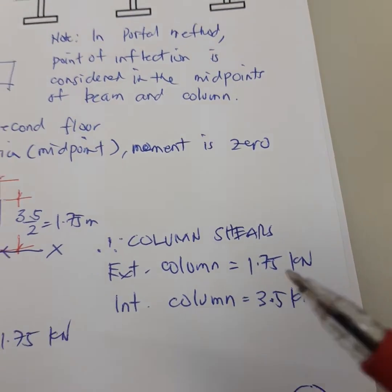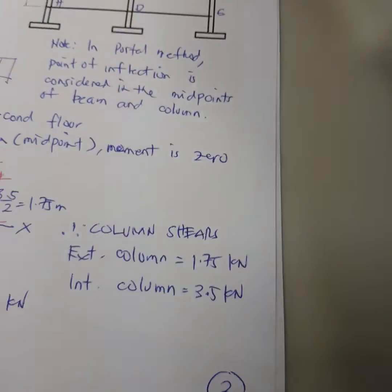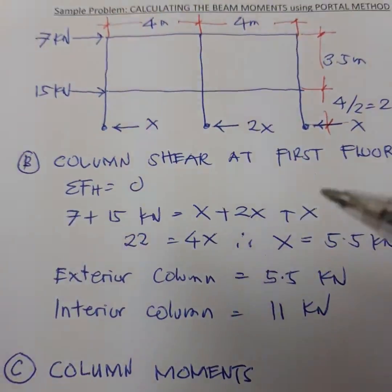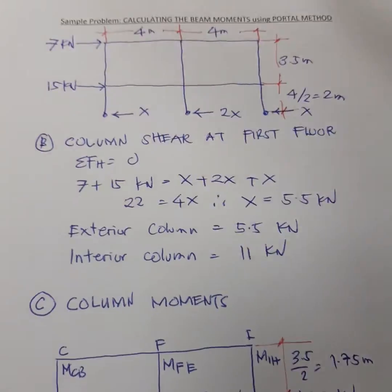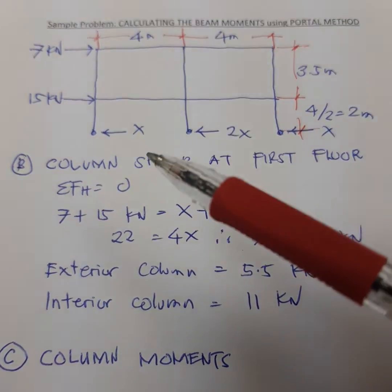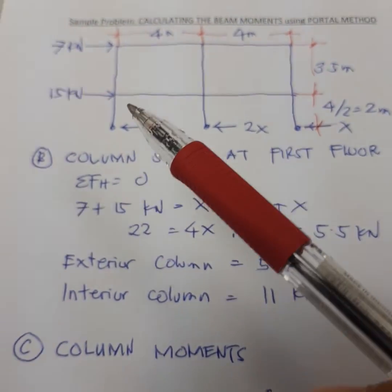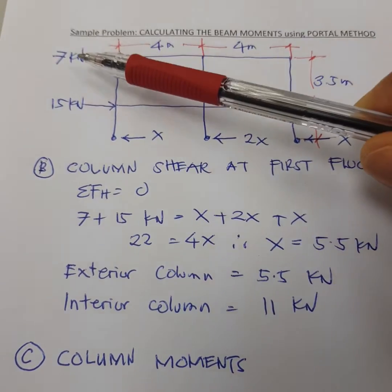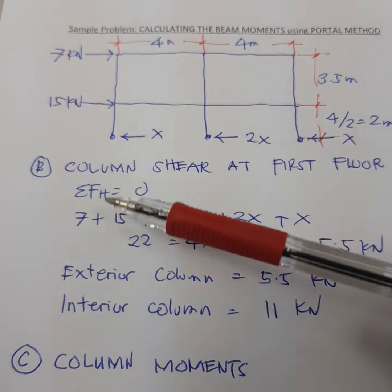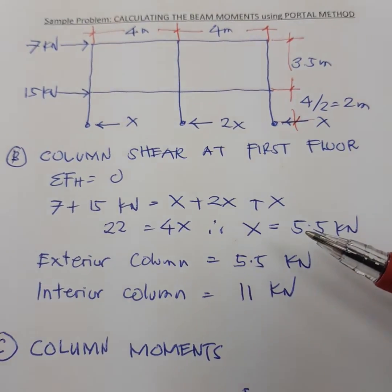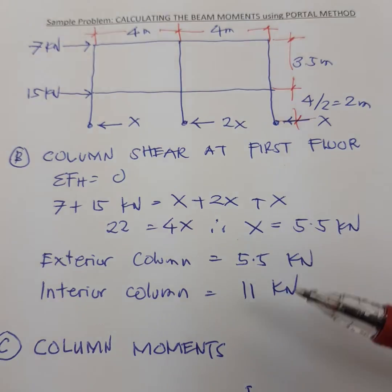From here we can compute now what are the columns. At the first floor again, you have two horizontal forces 7 and 15, so 7 and 15 equals x, 2x, 2x and x. We can compute x as 5.5 for exterior and 11 for interior.